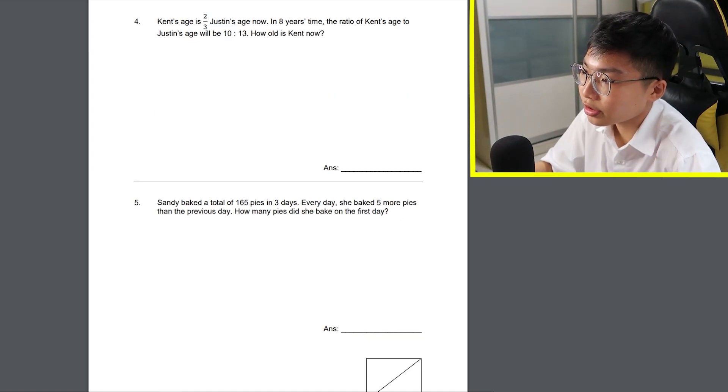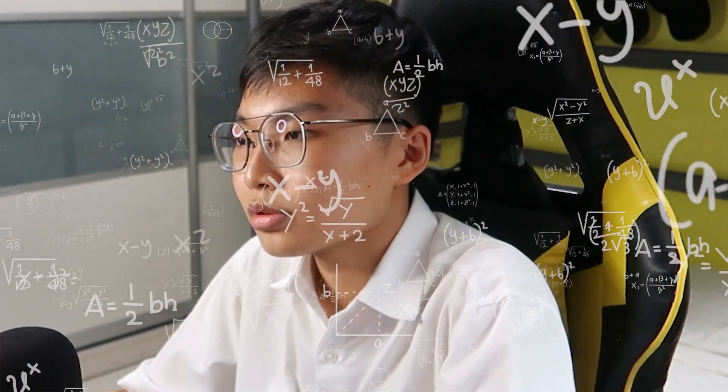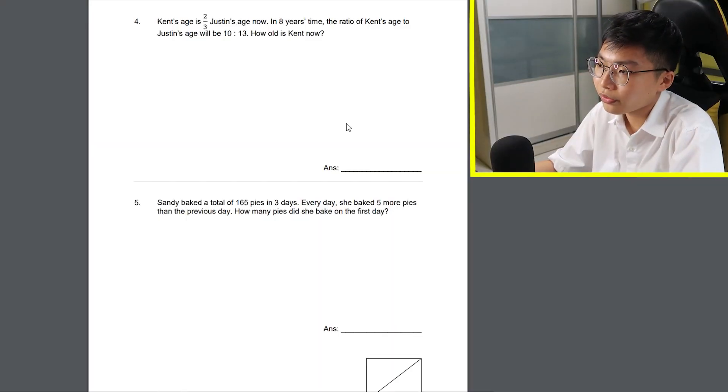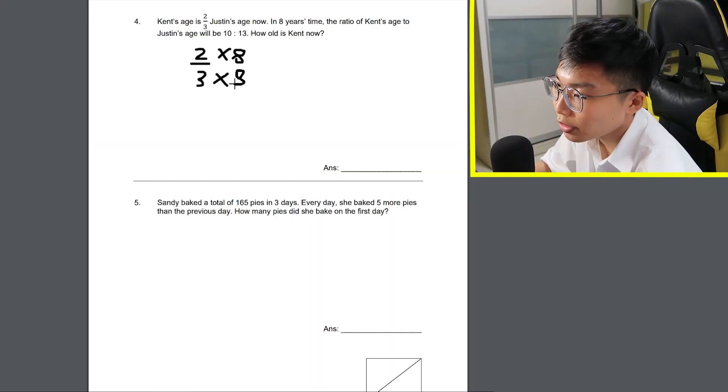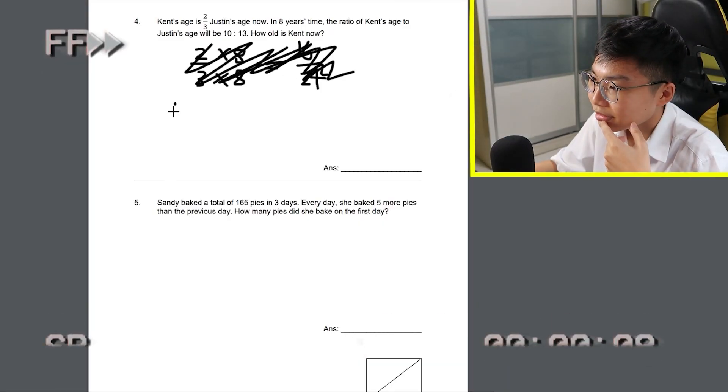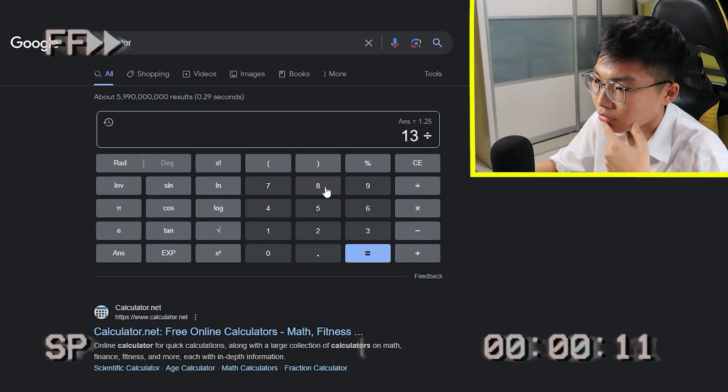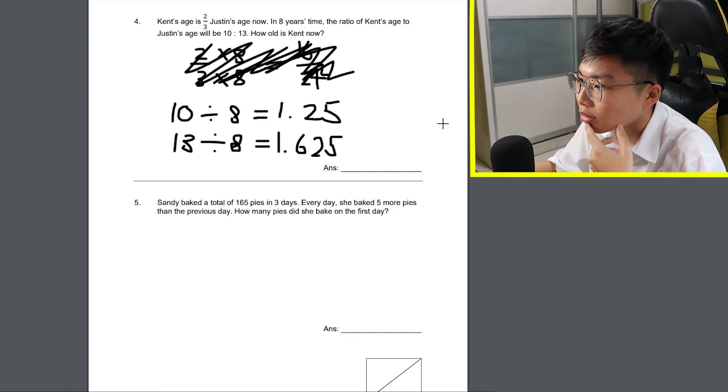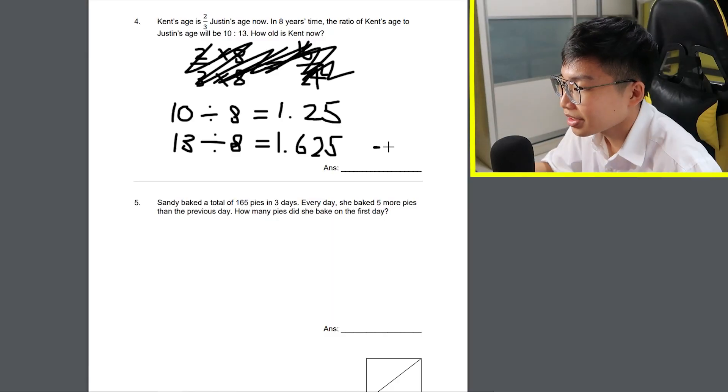Ken's age is 2 third Justin's age now. In 8 years time, the ratio of Ken's age to Justin's age will be 10 to 13. How old is Ken now? Okay, I think I have a rough idea of how to solve this. I'm gonna multiply 2 third by 8 which makes it 16, 24. But wait, it doesn't help. Huh, I give up. 7.